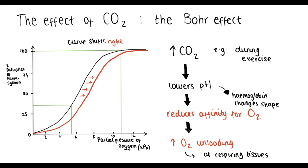Quite often in the exam, you'll be given a graph and asked to use it to explain this effect. You'll need to find roughly the concentration of oxygen in the tissues and find the corresponding percentage saturation of haemoglobin for each curve. That will show you that at a particular partial pressure of oxygen, the percentage saturation of haemoglobin will be lower when carbon dioxide is higher.